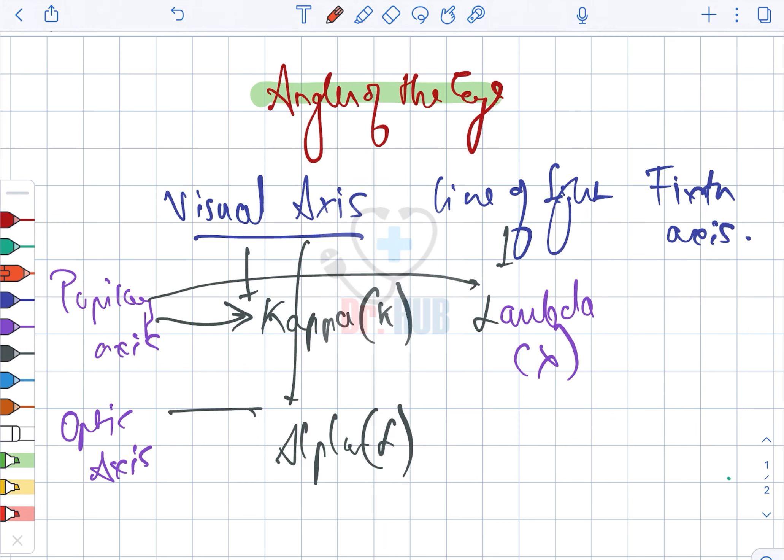Then we have the fixation axis and the optic. This is gamma.